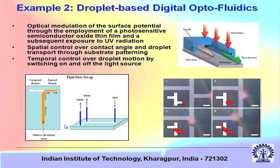Let us look at a T-shaped microfluidic channel. T-shaped microchannels are very commonly used for droplet generation, because at the junction, because of shear, the continuous fluid may get broken into droplets. But in this particular example we will not focus on droplet generation. Let us say we inject deionized water from the bottom of the channel — it enters the junction and we have to decide whether to transmit the fluid to the right or to the left, just like a smart logical system.